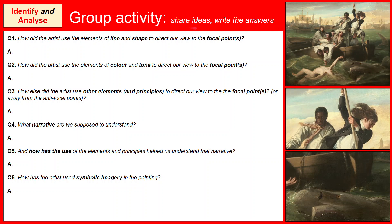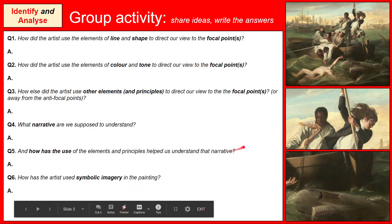In a group activity, share your ideas and write the answers down. The questions are about how the artist uses the elements of line and shape to direct the viewer to focal points, how color and tone direct our view to focal points, how other elements and principles direct us to focal points or away from anti-focal points, what narrative we're supposed to understand, and finally how the artist used symbolic imagery in the painting.